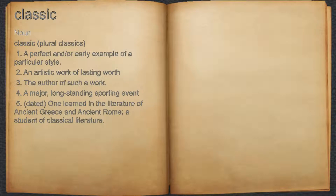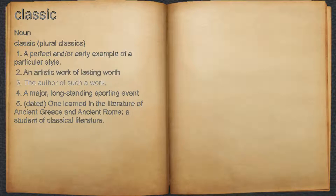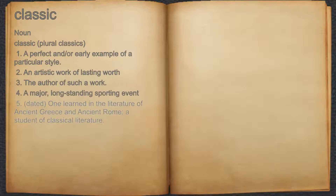Classic. Noun. 1. A perfect and oral example of a particular style. 2. An artistic work of lasting worth. 3. The author of such a work. 4. A major, long-standing sporting event. 5. Dated: one learned in the literature of ancient Greece and ancient Rome; a student of classical literature.